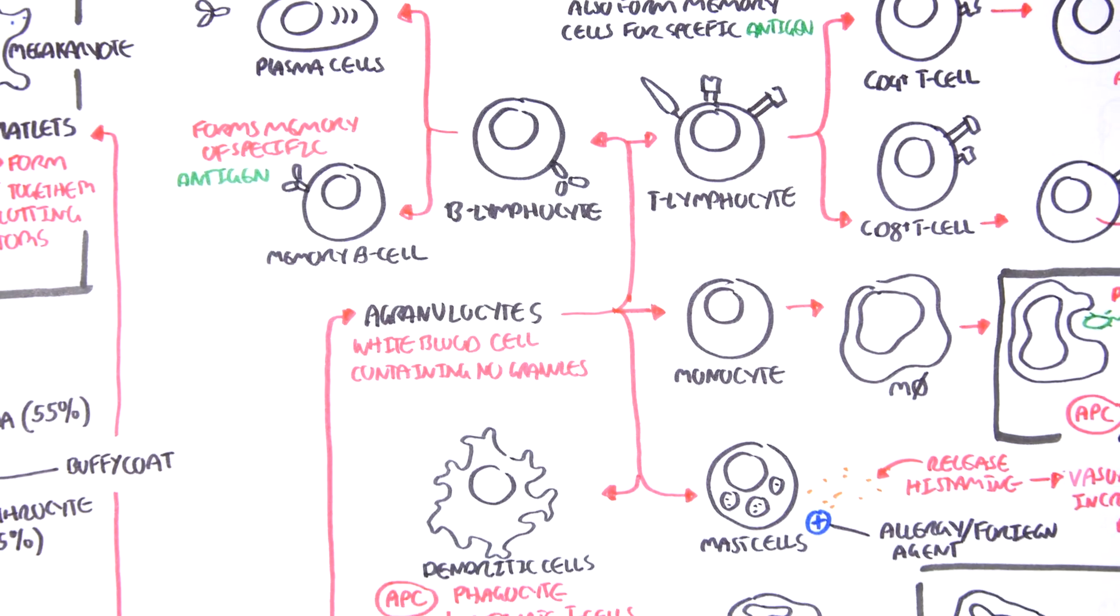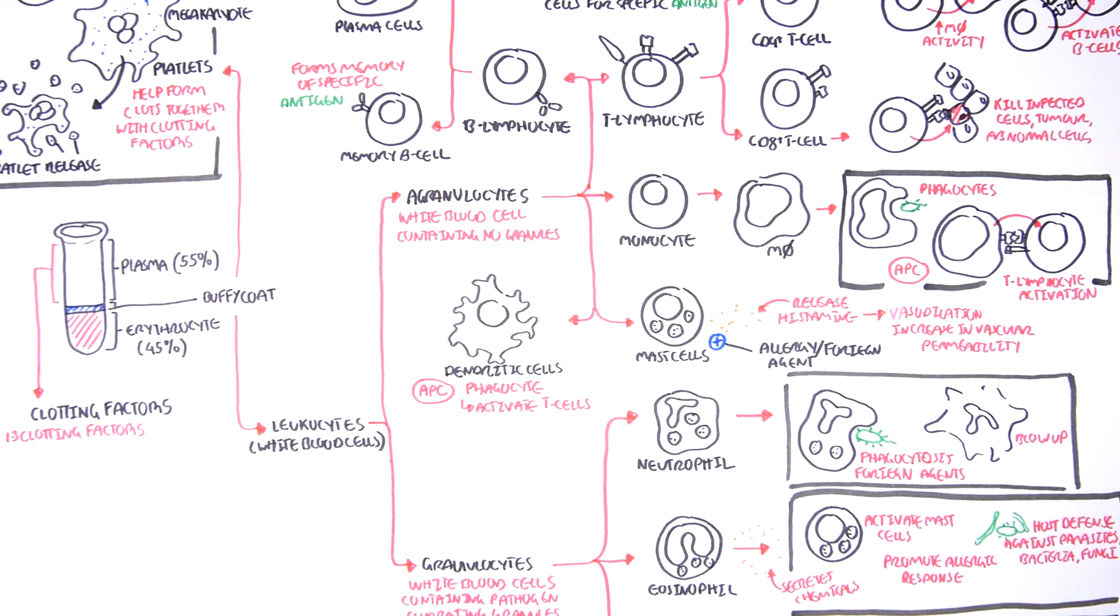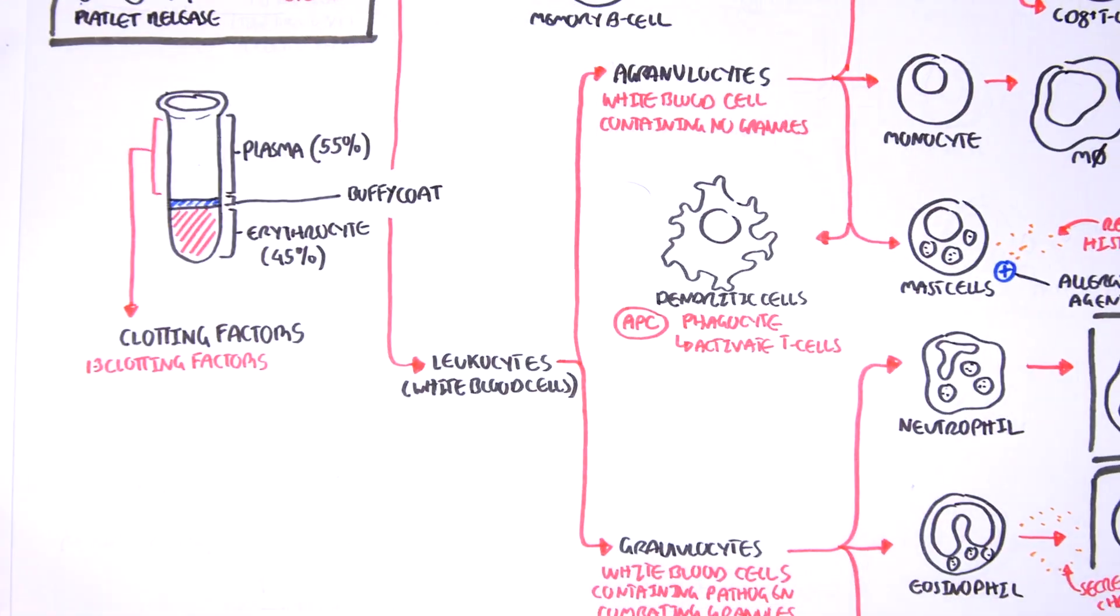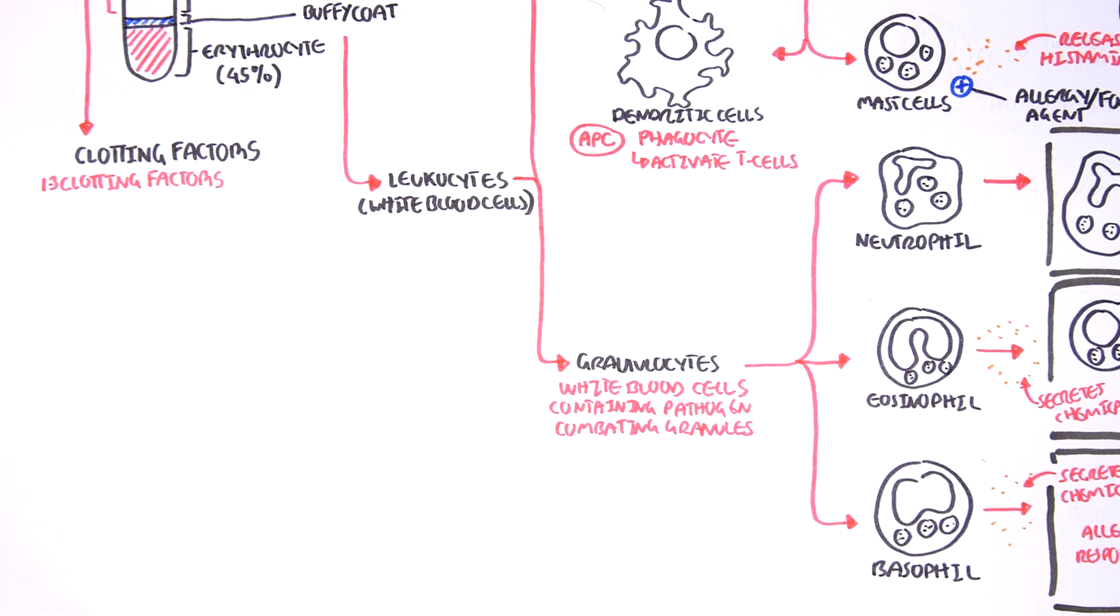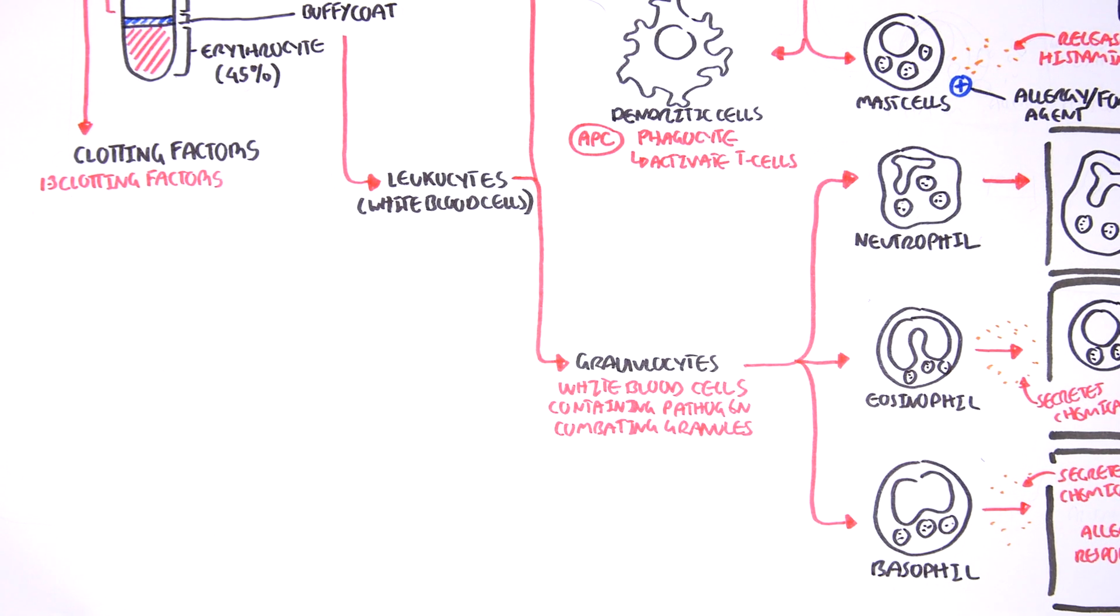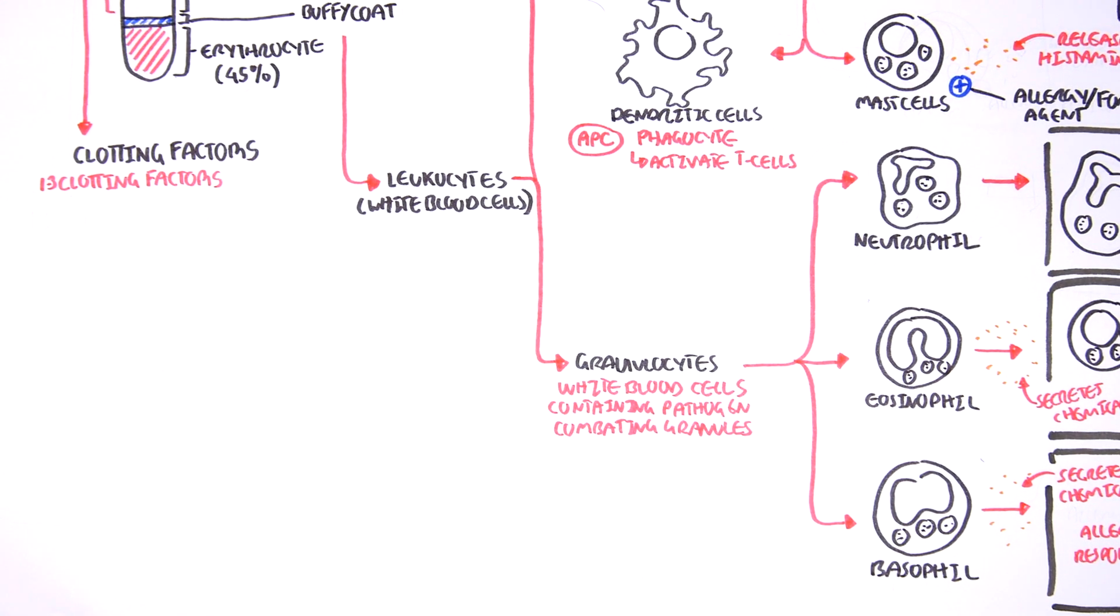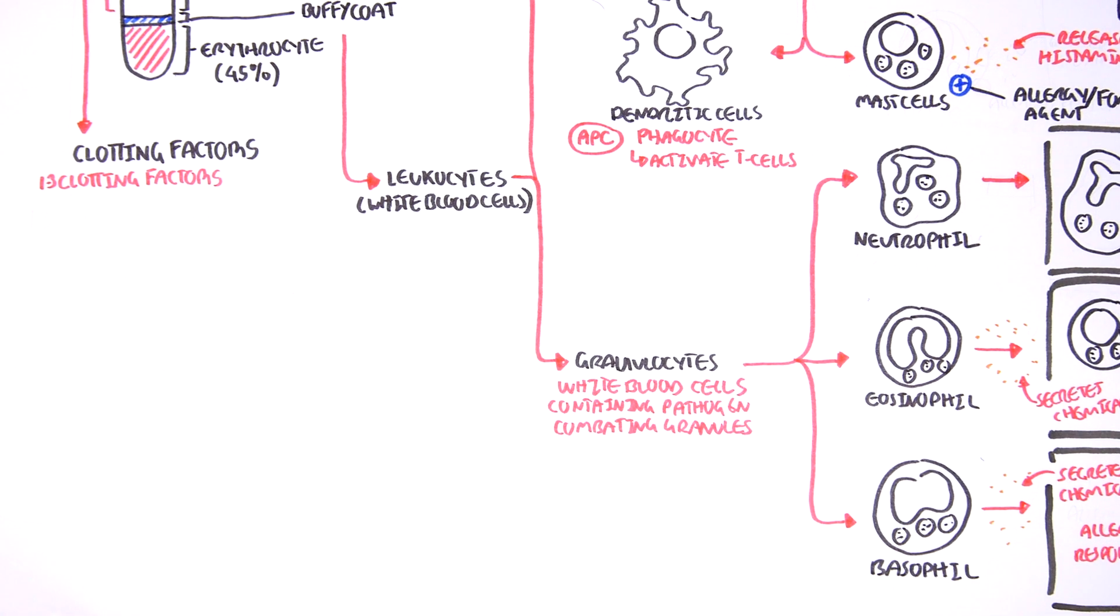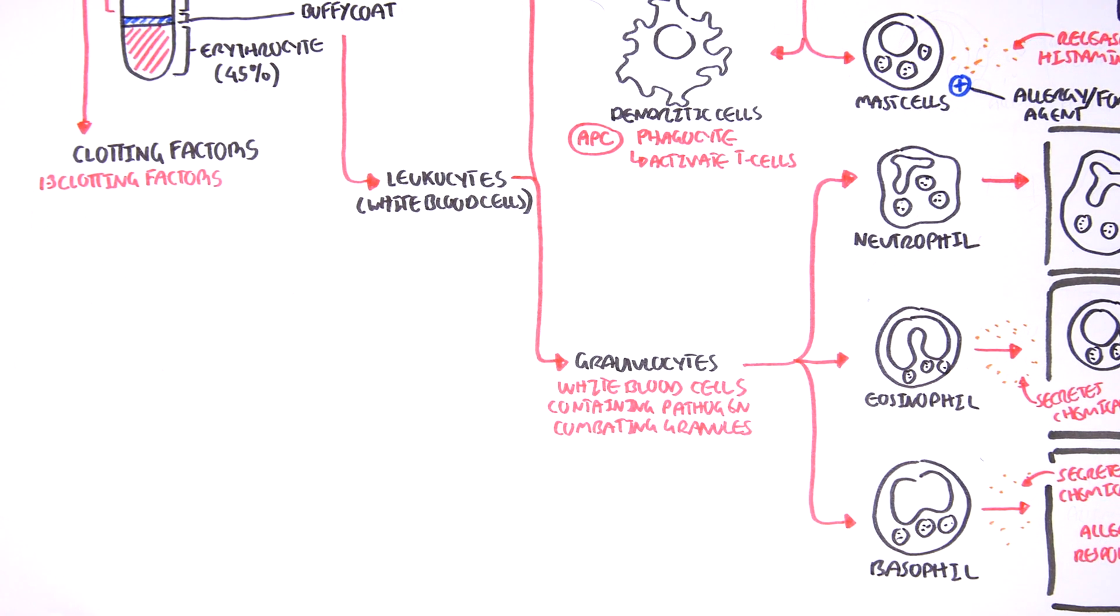I hope that was not too confusing, that last bit. If that was, you can watch a video on the immune system overview just to understand what these T and B cells actually do and how they function. So that concludes the video. I was going to talk a little bit about clotting factors, but I realized I did a big mistake. But anyway, we have 13 clotting factors in our body. And that concludes the video. I hope you enjoyed it. Thanks for watching.